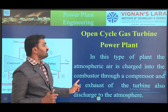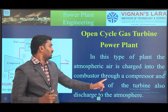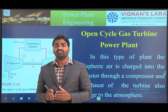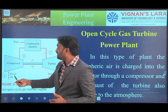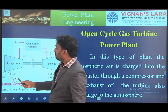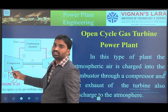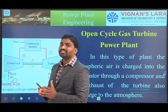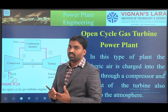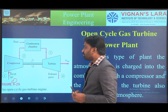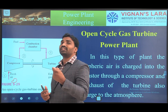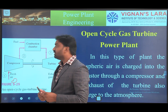In an open cycle plant, atmospheric air is charged into the combustor through the compressor, and the exhaust from the turbine is also discharged to the atmosphere. Fresh air is taken from the atmosphere and entered into the compressor, where it is compressed to maximum pressure, increasing the temperature and pressure of the air. This is necessary for a better combustion process.